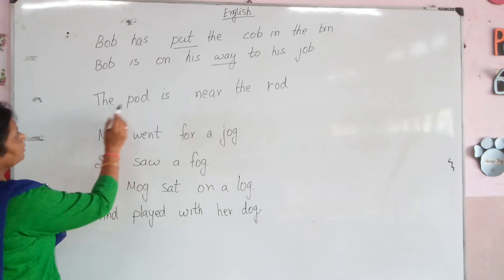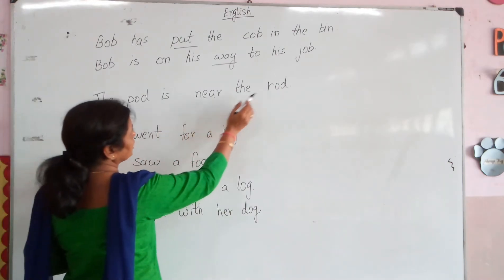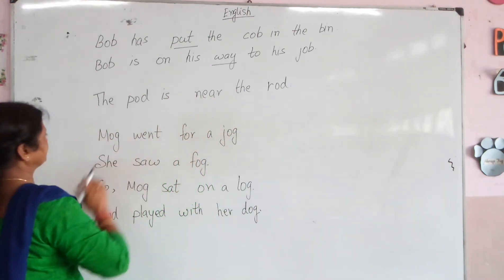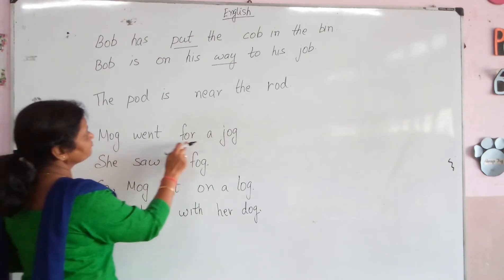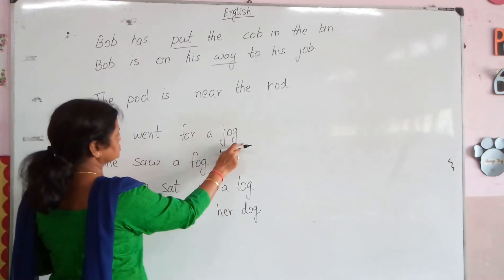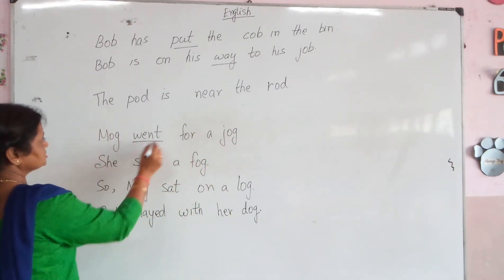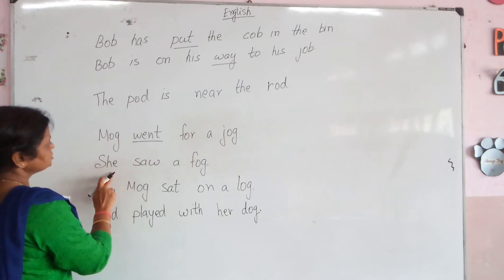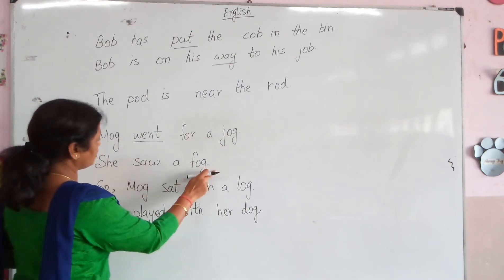The pod is near the rod — this word has been repeated many times. Bob went for a job. This word is 'went'. She saw a fog.